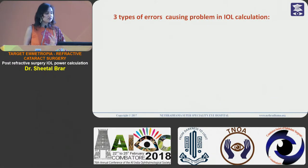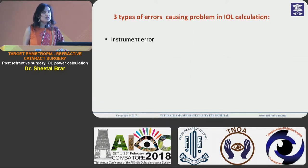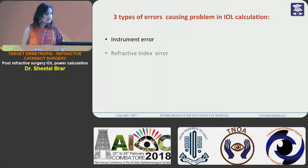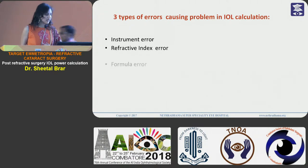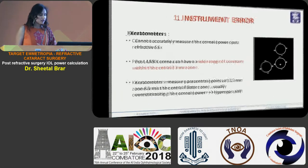Essentially there are three types of errors which can cause this problem in IOL power calculation. First is the instrument error, second is the refractive index error, and finally it's the formula error.